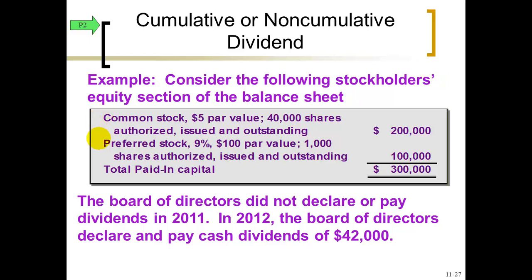Here we have an example with two classes of stock — common and preferred — each with their own par value, authorized shares, and issued or outstanding shares. For preferred stock, you're given a rate: par value times rate equals the annual dividend, just like interest. So if you own one share of preferred stock, you can expect to collect $9 of dividend each year. With 1,000 shares, $9,000 of preferred dividends must be paid each year before common shareholders receive any dividends.